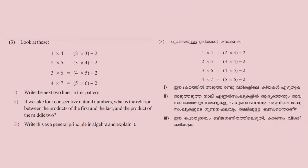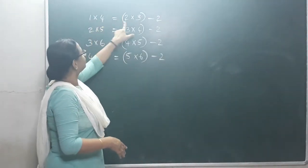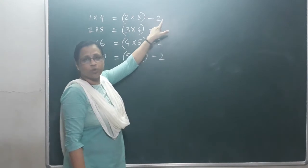Look at this: 1 into 4 is equal to 2 into 3 minus 2; 2 into 5 is equal to 3 into 4 minus 2; 3 into 6 is equal to 4 into 5 minus 2; 4 into 7 is equal to 5 into 6 minus 2. Write the next two lines in this pattern. If we take four consecutive natural numbers, what is the relation between the product of the first and last and the product of the middle two?